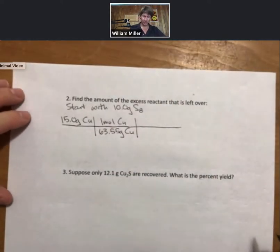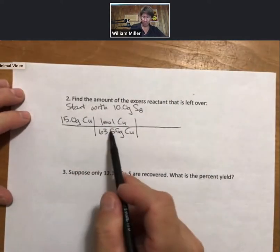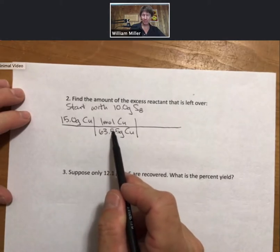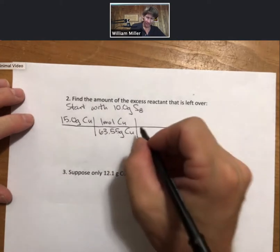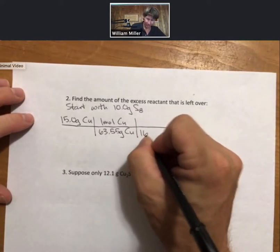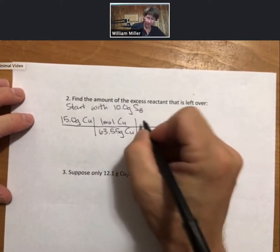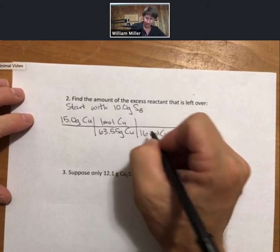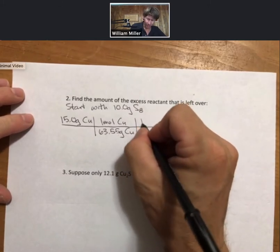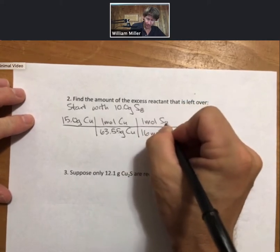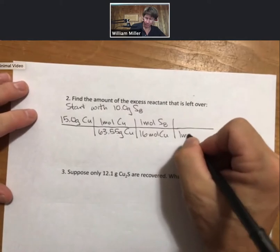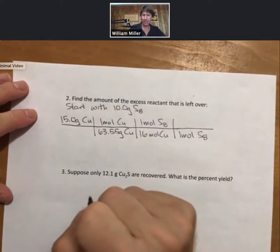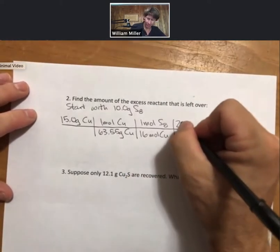There's definitely patterns forming here. Of course, we start with the grams. We do a molar mass upside down, so meaning that the grams are on the bottom. Now for every 16 moles copper, we have 1 mole of sulfur, and for sulfur, 1 mole has a mass of 256.56 grams.